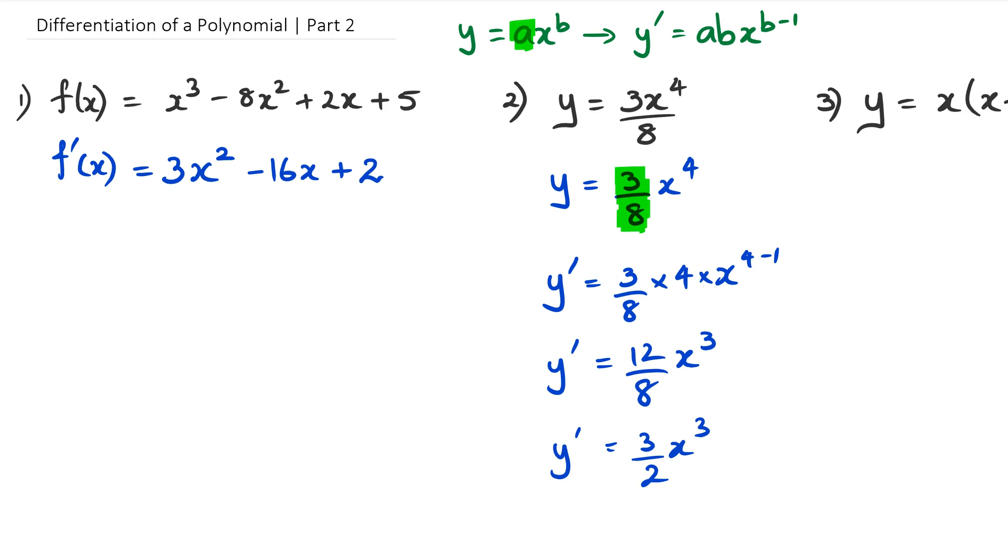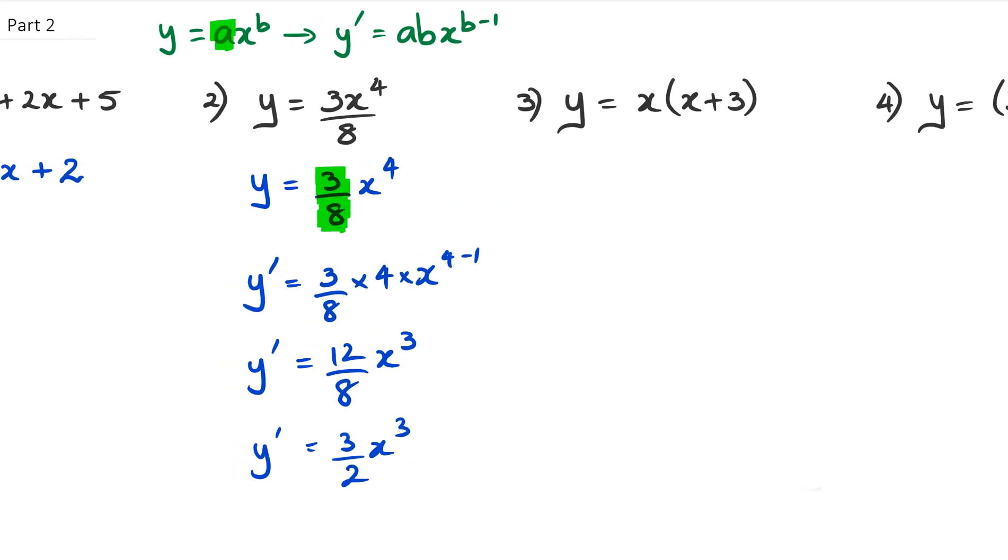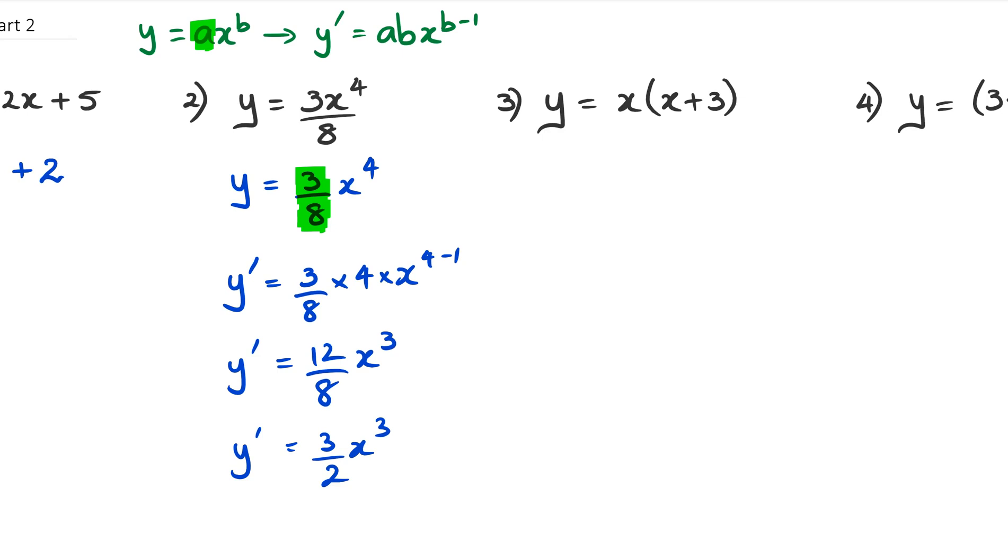Now we go to question number 3. Question number 3, and this is something you need to know, when you're dealing with brackets and you want to differentiate, the best thing is to get rid of the brackets. So the way we're going to get rid of those brackets is by expanding this equation. What we're going to end up with is y is equal to x times x which is x squared, and then x times 3 which is 3x.